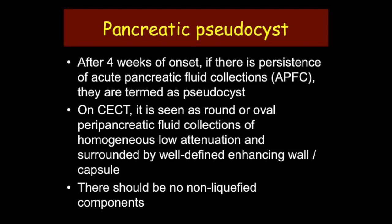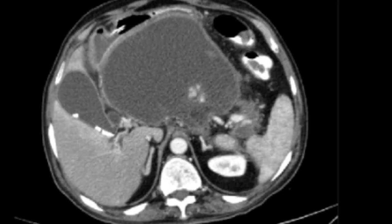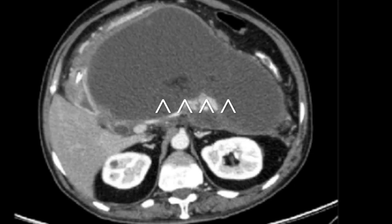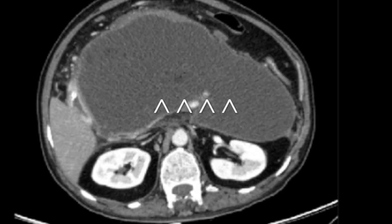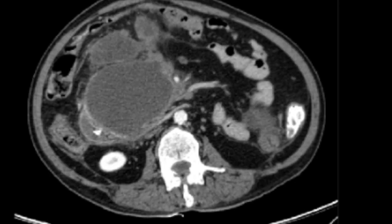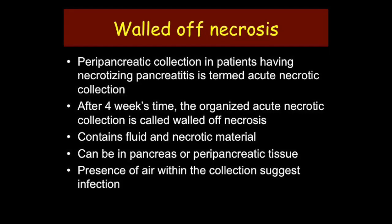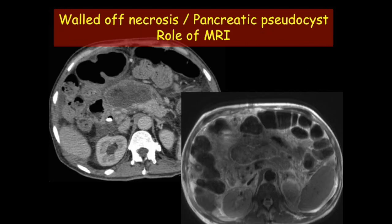Walled-off necrosis refers to cysts which contain fluid along with necrotic material. These occur in patients who had acute necrotizing pancreatitis, and when the acute necrotic collection persists for more than four weeks, it is termed walled-off necrosis. MRI can help differentiate between pseudocysts and walled-off necrosis because it demonstrates debris better than CT scan.